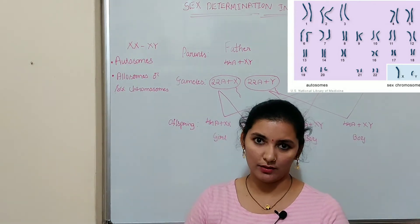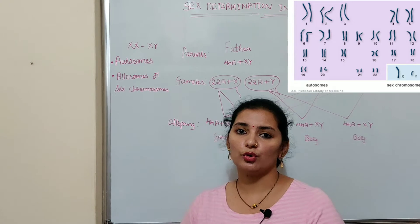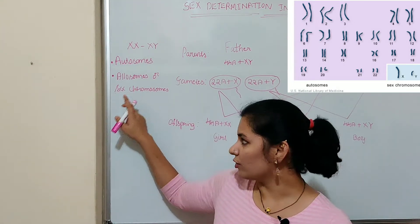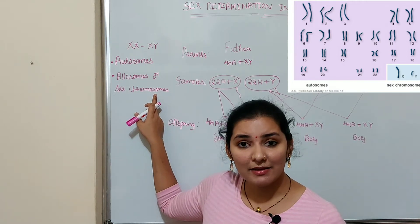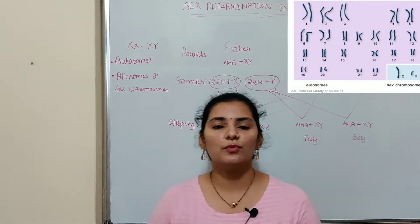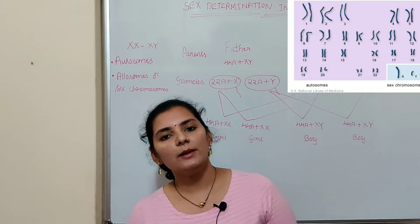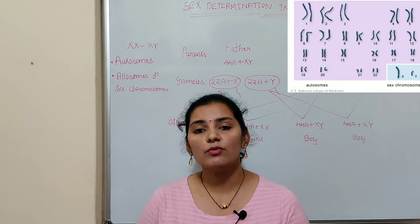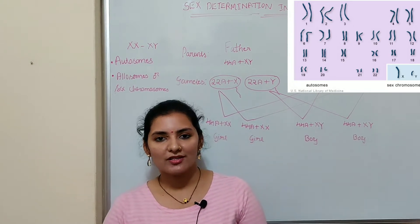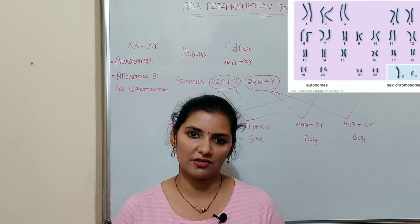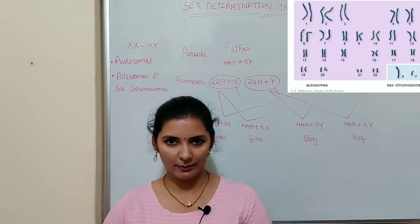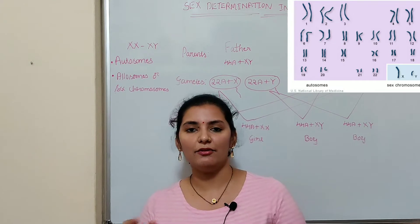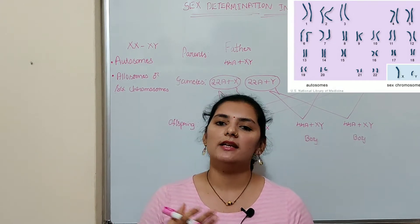It is these autosomes which are responsible for the somatic or physical characters of an individual. Along with these autosomes, humans have one more pair of allosomes, which is also called sex chromosomes. As the name indicates, these sex chromosomes play an important role in the sex determination process and are responsible for the sexual characteristics of both male and female. These allosomes or sex chromosomes are not the same in male and female — their size, structure, and genes present on the chromosome are all different.